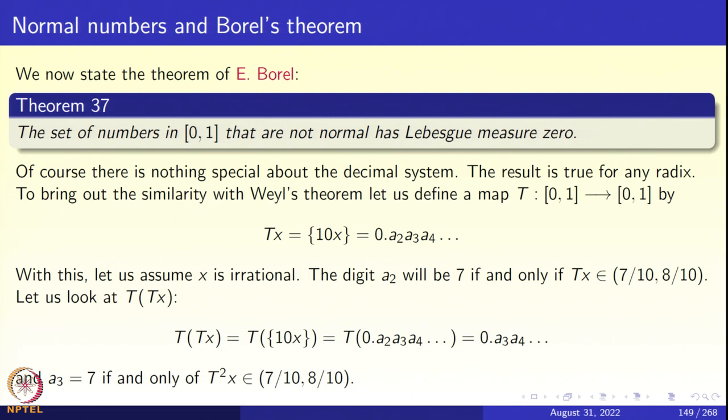Of course, there is nothing special about the decimal system. You could work with any radix. For example, you could work with binary systems and you can ask what are the asymptotic relative frequencies with which the digits 0 and 1 appear, and they are supposed to appear with asymptotic relative frequency half each. Then you will say that x is normal in the binary system. You can work with hexadecimal system, that is radix 16 if you like. So the first observation is we can work with any radix, but let us for simplicity work with the decimal system because that is the most familiar one and the arguments will go through.